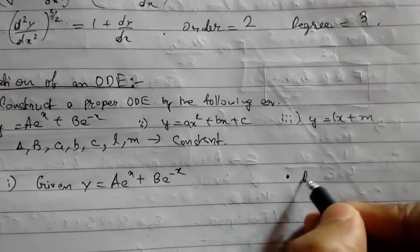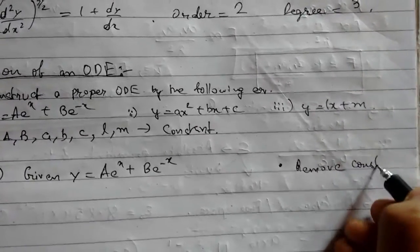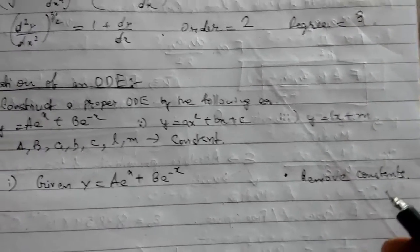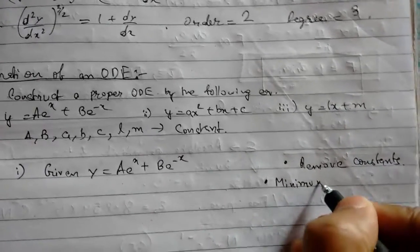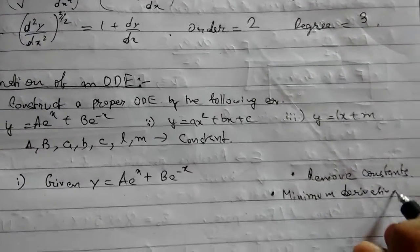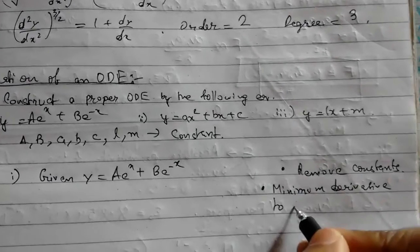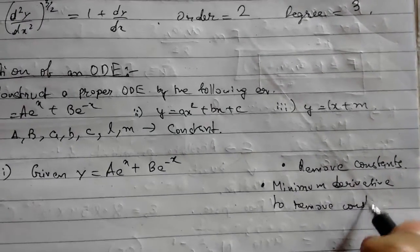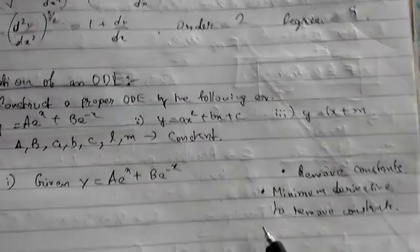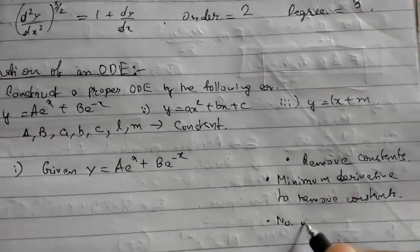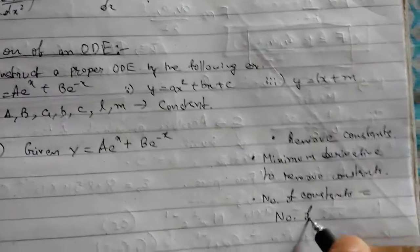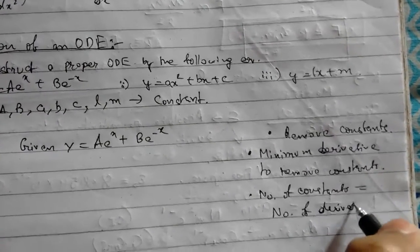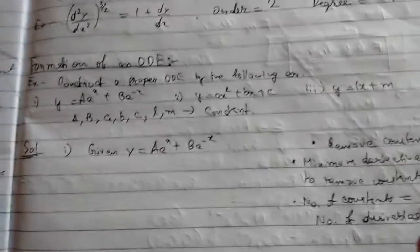First, we need to remove constants. This is important. Secondly, we need minimum derivative to remove constants. And third, number of constants must be equal to number of derivatives.